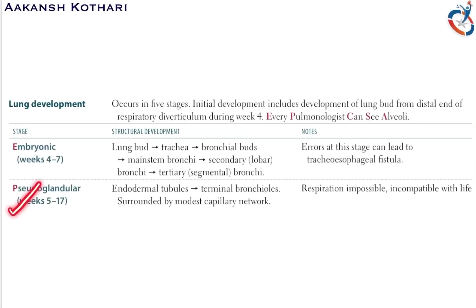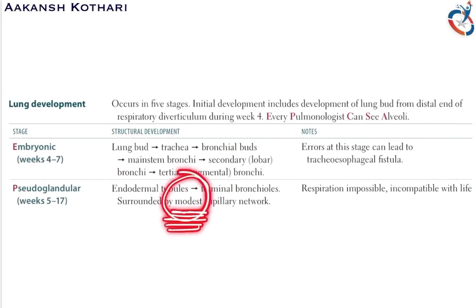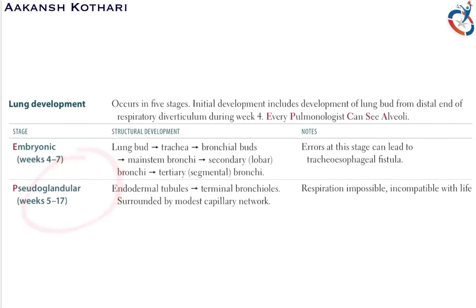The pseudoglandular phase lasts from week five to week 17. During this phase, endodermal tubules are converted into terminal bronchioles, surrounded by a modest network of capillaries. Respiration is impossible during this phase, making it incompatible with life.